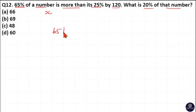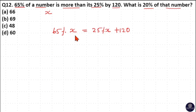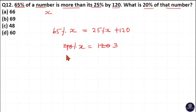65% of x is 120 more than its 25%. The difference between 65% and 25% is 40%. So 40% of x is 120, meaning 40 goes 3 times in 120. So 1% of x is 3, then 20% of x will be 20 × 3 = 60.